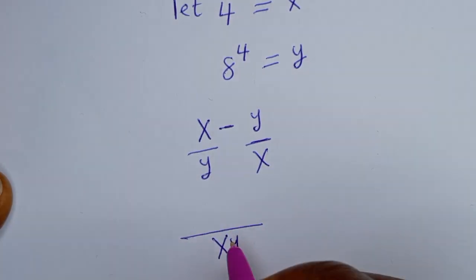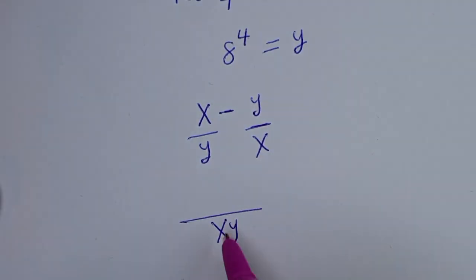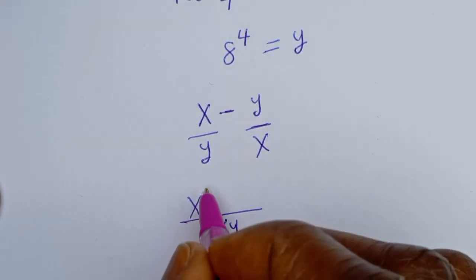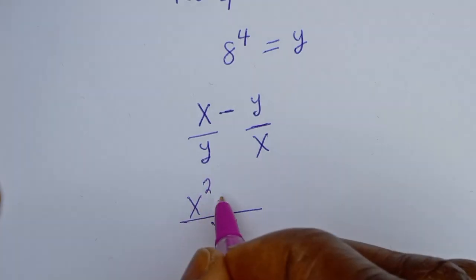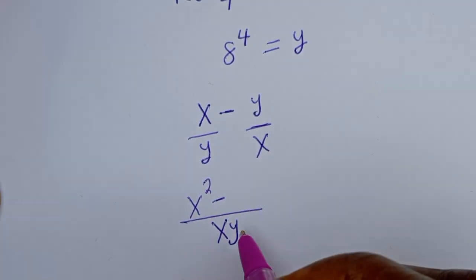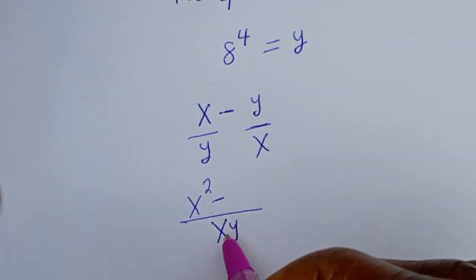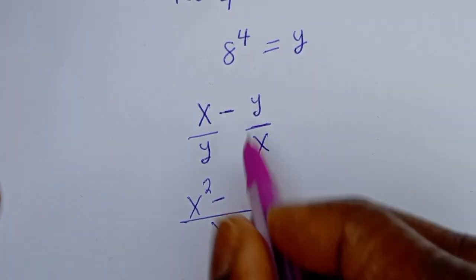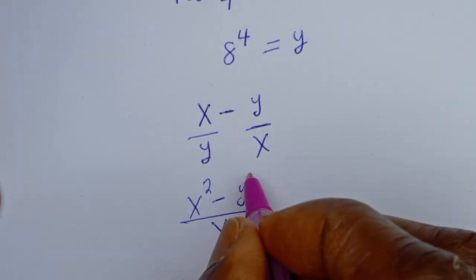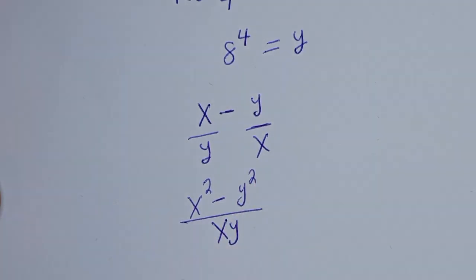With denominator xy, the numerator becomes: x times x, giving us x squared, minus y times y, giving us y squared. So we have x squared minus y squared, all over xy.